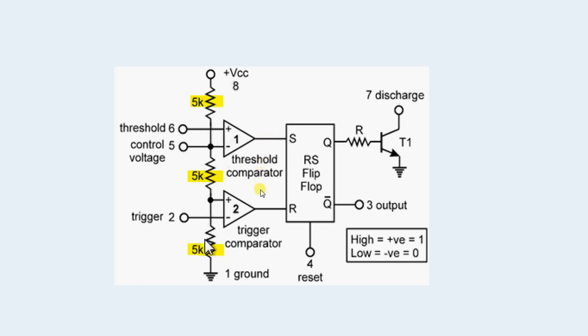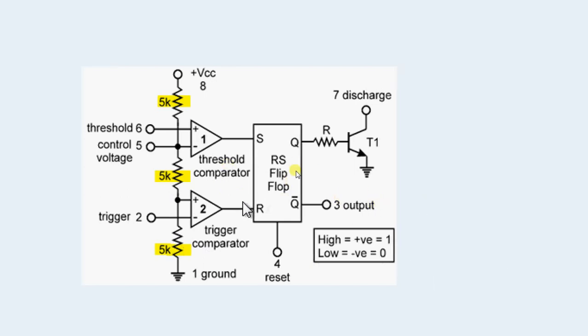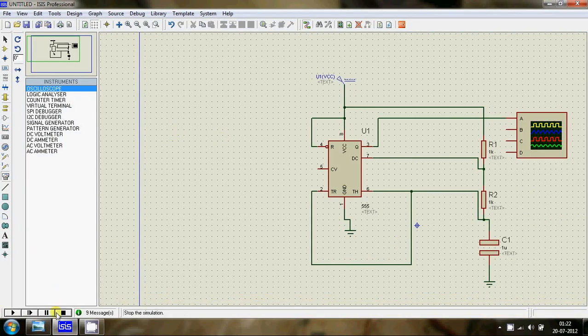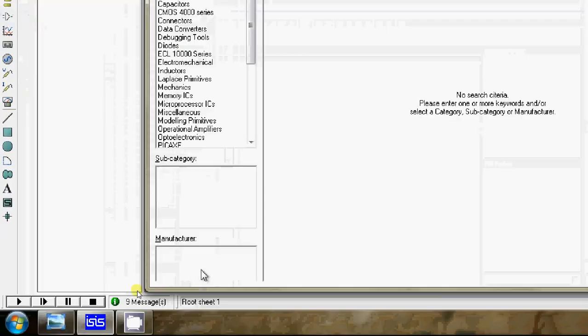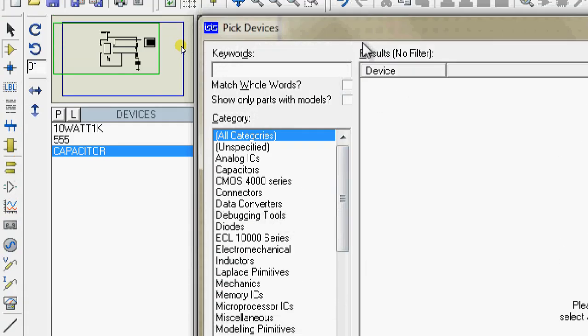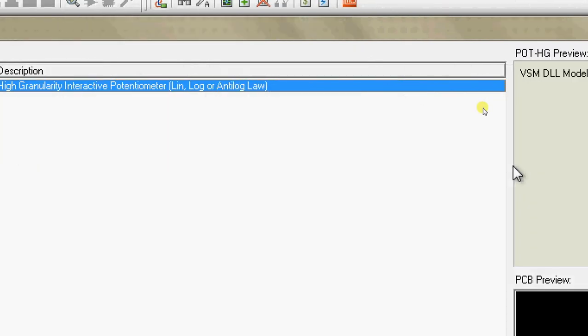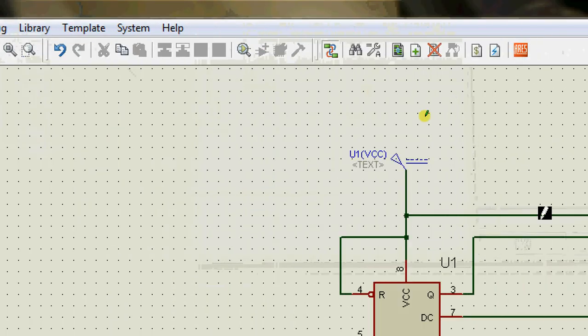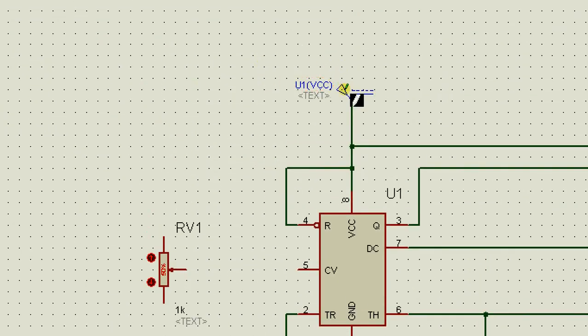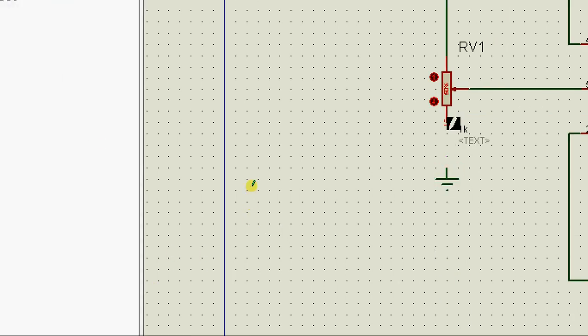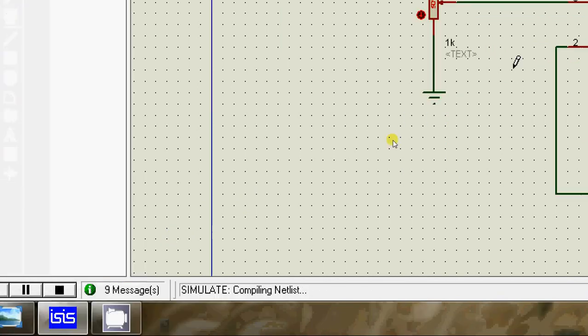The output goes low and the transistor is switched off. The capacitor starts charging again towards 2/3 of the supply. The capacitor keeps charging to 2/3 of VCC and discharging to 1/3 of VCC, and the output is just a square wave. Let's make our circuit a little more interesting. Type in interactive and resistor.